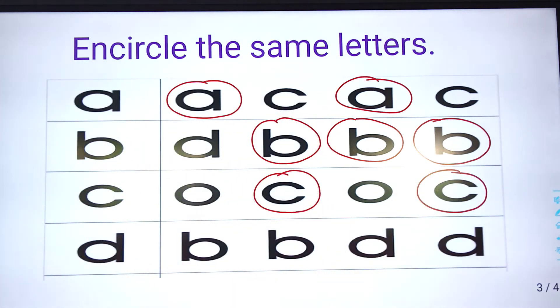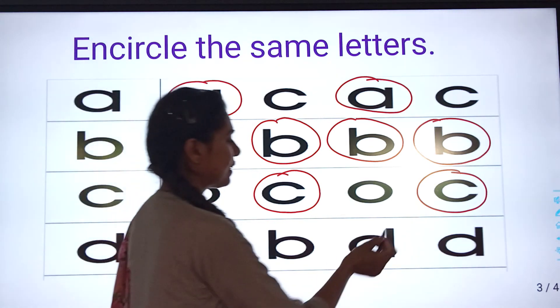Come to the next. That is, small letter d. Then, haa, d mein circle karay ga.